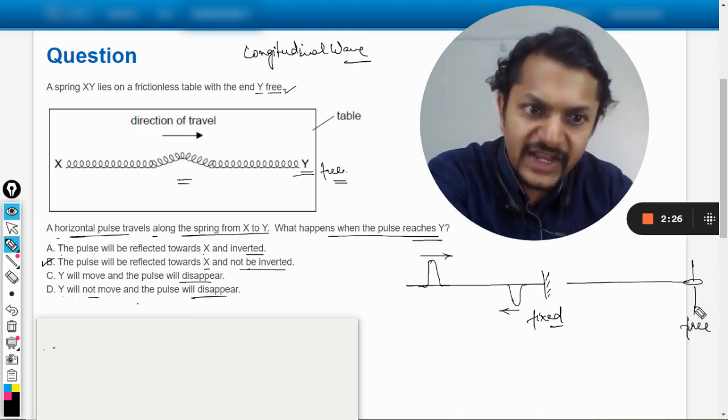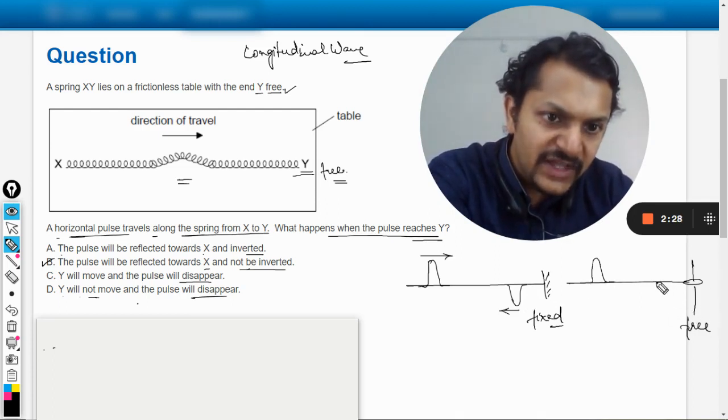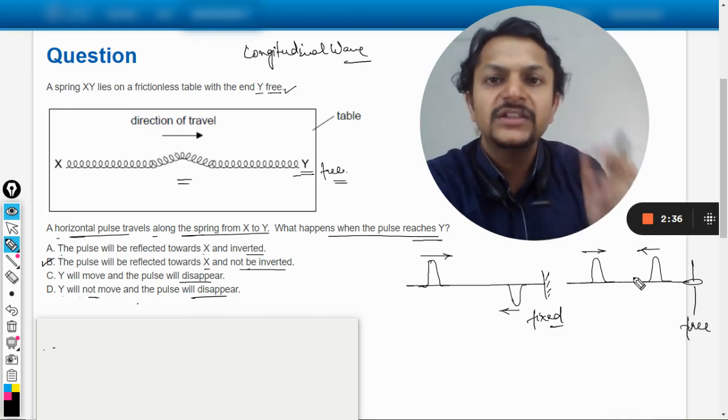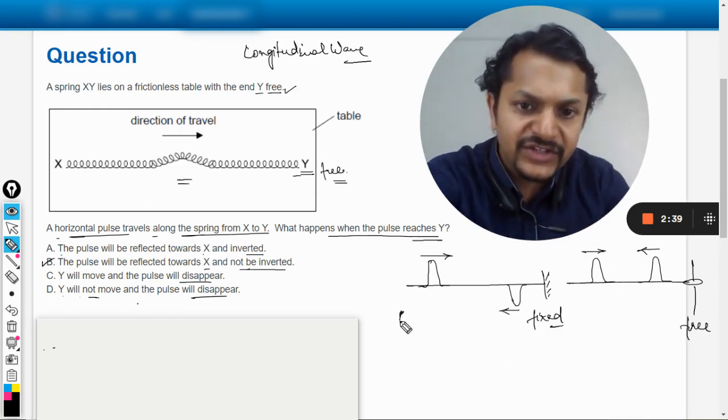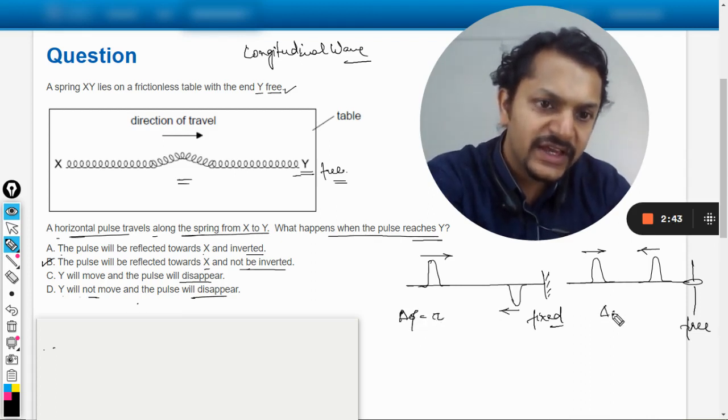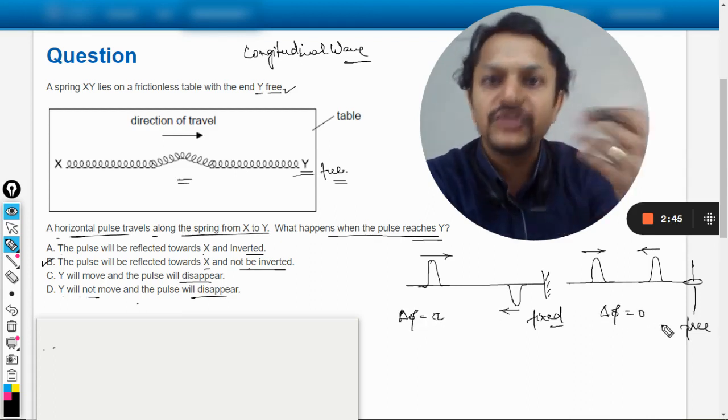Now in this case of a string, if it is a free end, so this is the wave that would be going, and this is the wave that would be coming back. So there is no phase change there, only the direction of the wave changes. In this case, the phase change is π, and in this case, the phase change will be equal to zero.